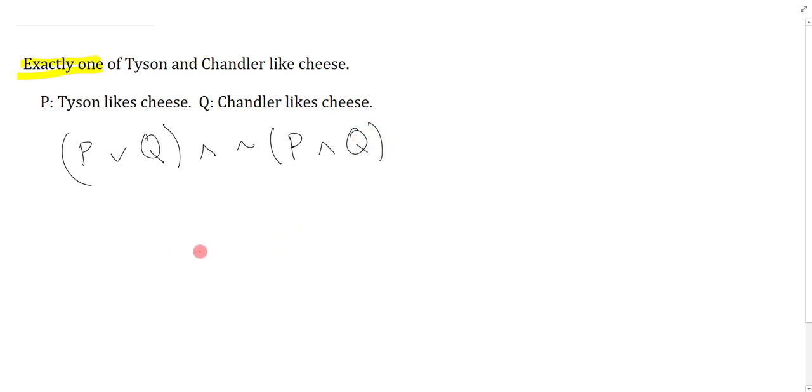An alternative way to symbolize this is to just stipulate the cases. This is sort of a popular way of doing it. You can say Tyson likes cheese and Chandler doesn't, or it's the case that Chandler likes cheese and Tyson doesn't. Either of these is perfectly acceptable with variants where you switch things around.